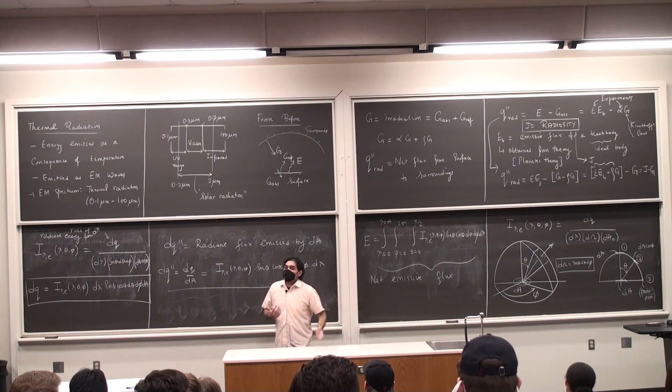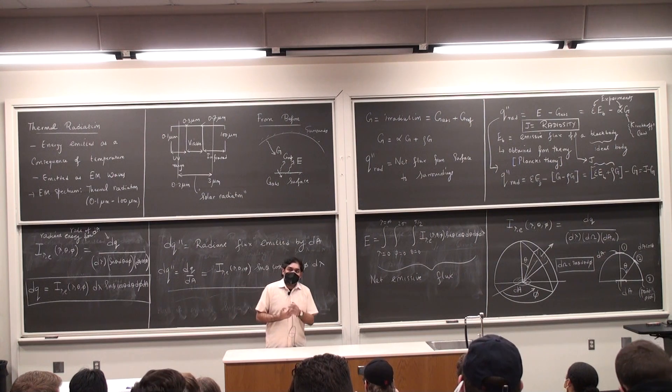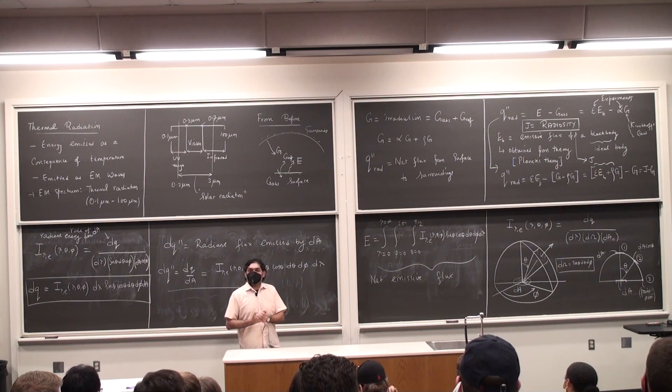Capital Eb comes from Planck's theory of radiation, capital G comes from Kirchhoff's laws. Put everything together, then we will be ready to solve the problem.